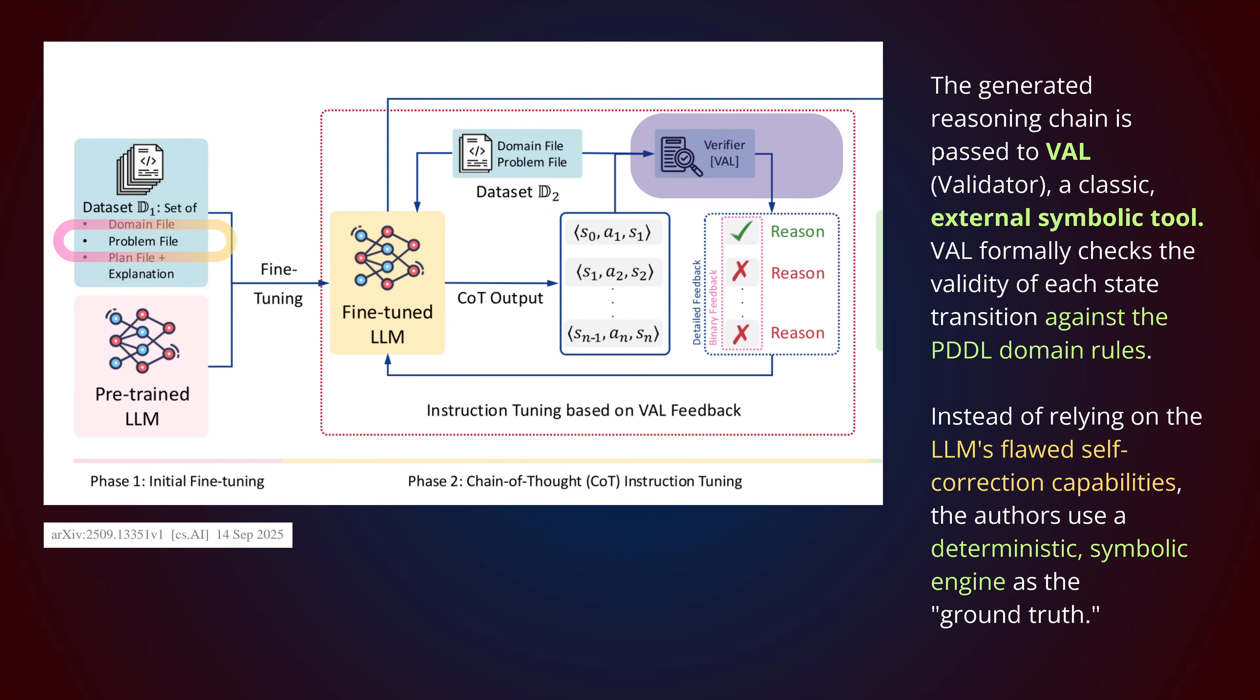Now comes the interesting part. We have to have the ground truth - the perfect external solver for logic. The external symbolic tool solver. You can go with whatever you like, commercial or open source. But you have to have a source of ground truth that is pure logic. It checks the validity of each state transition against the PDDL domain rules. This tells us yes, go or no go in a detailed way. Instead of relying on the LLM's flawed self-correction capabilities, we have to have an authority that is absolutely deterministic - a symbolic engine that is the real ground truth. We cannot go with the LLM itself. We have this external verifier, validator.